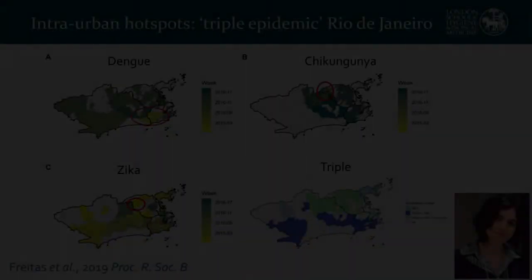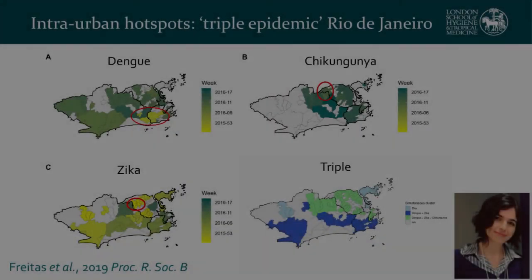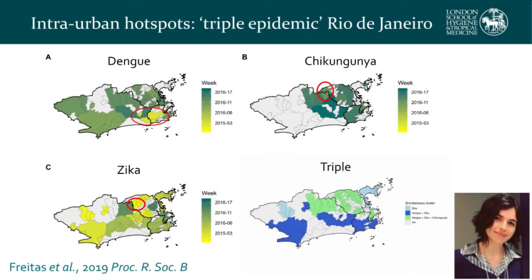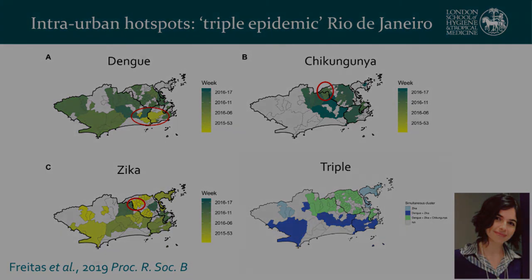We've also been working with colleagues at Fiocruz to think more at the intra-urban level — not only dealing with large regions, but thinking about how the risk of arboviruses, including not only dengue but also chikungunya and Zika that are also circulating within Brazil, and how different socioeconomic patterns and living conditions within the city might impact that risk.